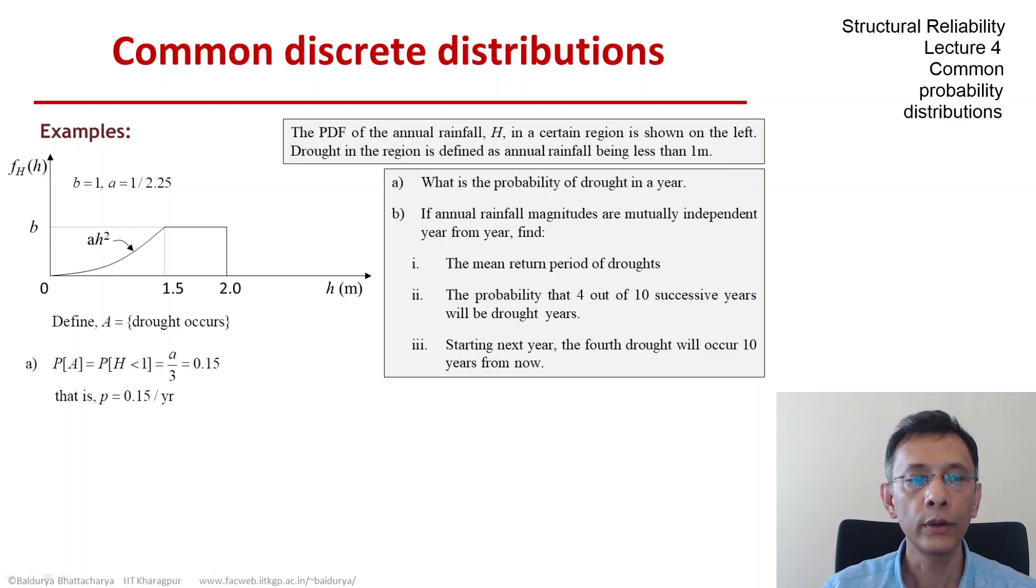The first question asks what is the mean return period. That is a simple application of the geometric distribution, and the mean return period is 1 over p, so that is about 7 years.